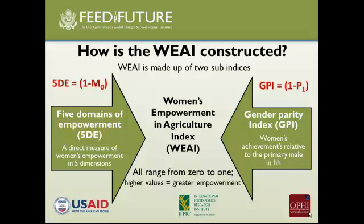From a structural perspective, we make two indices. One is called the 5DE, for five domains of empowerment, and the other is called the GPI, or Gender Parity Index. The 5DE is based on the M0, the Alkire-Foster methodology, and the GPI is based on the poverty gap of the Foster-Greer-Thorbecke class of measures. Both indices range from 0 to 1, where higher values mean greater empowerment. The final WEAI index is a weighted sum of these two, but all the meaningful information is in the individual sub-indices.